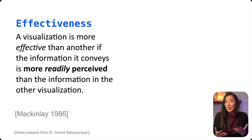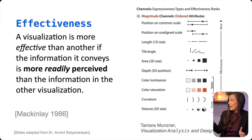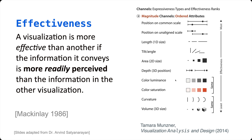Luckily, researchers have summarized the vast majority of this perceptual research so you don't have to read hundreds of papers. One of the best summarizations, in my opinion, is this organization by Tamara Munzner. In her book Visualization Analysis and Design, she has summarized this research in figures that sort the different channels based on their effectiveness. Position along a common scale is more effective than volume or 3D size interpretations. You can use a figure like this to determine which type of encoding you want to use.